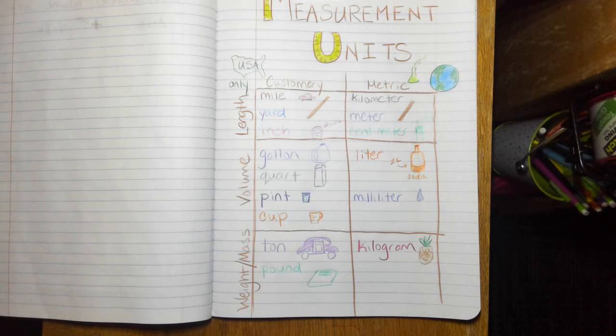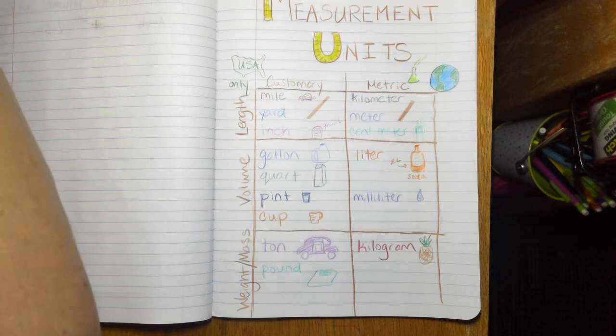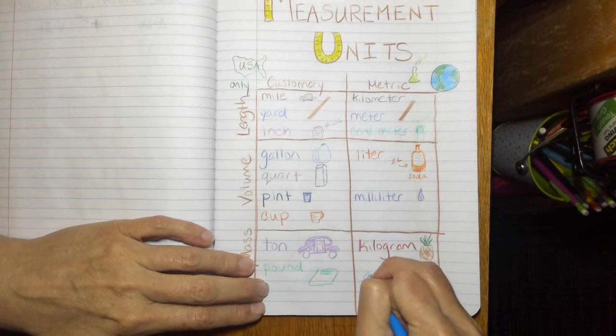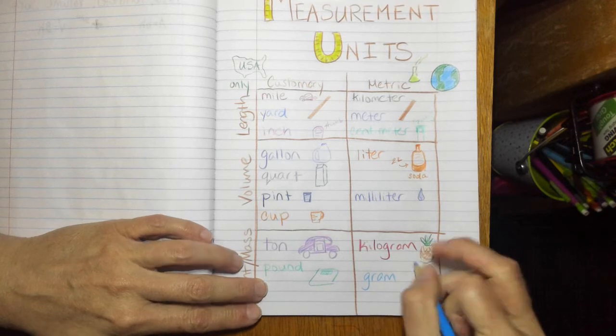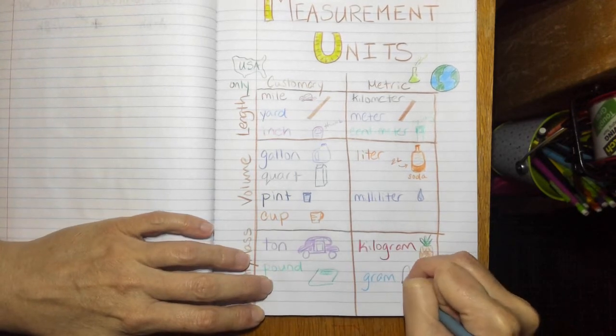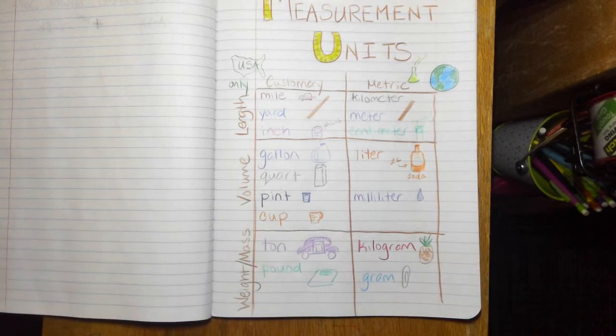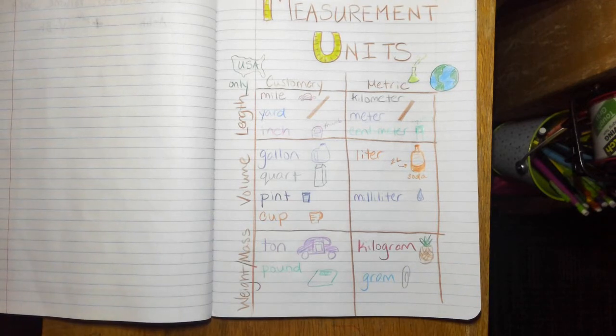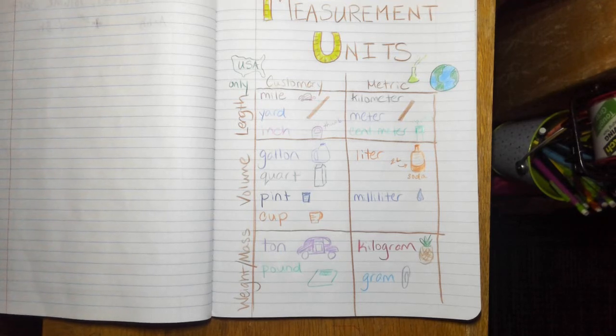And then the other unit that we talked about over here is the gram, and a gram is a super tiny amount. It's actually about the weight of a paper clip. So this is just kind of a general reference and review for you of your measurement units.